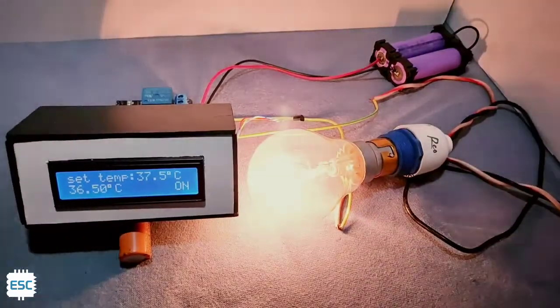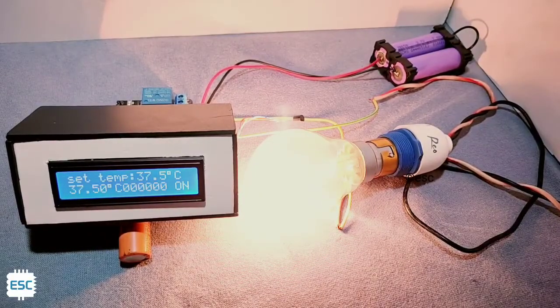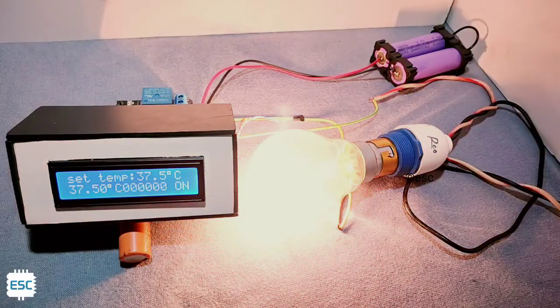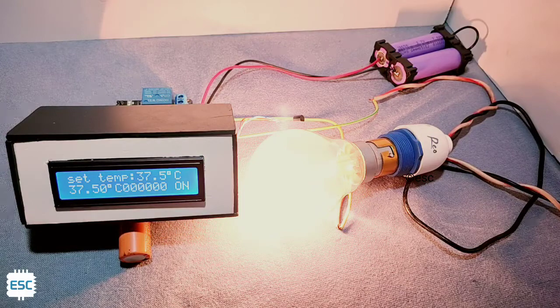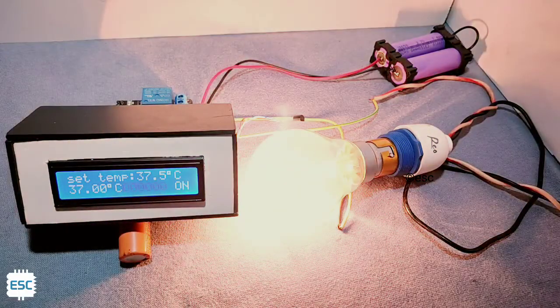And you can see when the incubator temperature reaches 37.5 degrees Celsius the bulb will automatically turn off. And also you can see when the temperature goes below 37.5 degrees Celsius the bulb will automatically turn on. So everything is working perfectly.